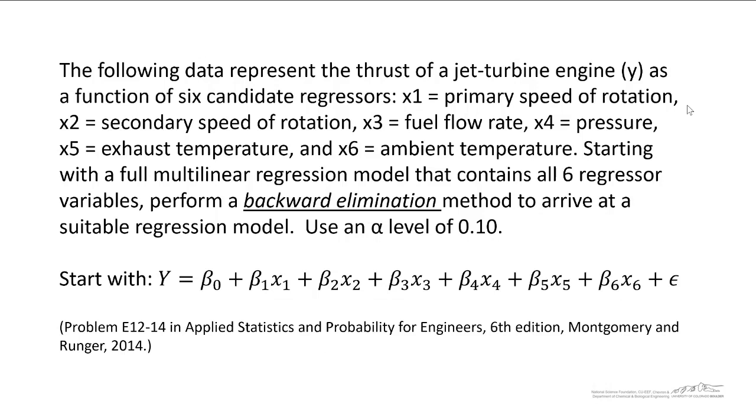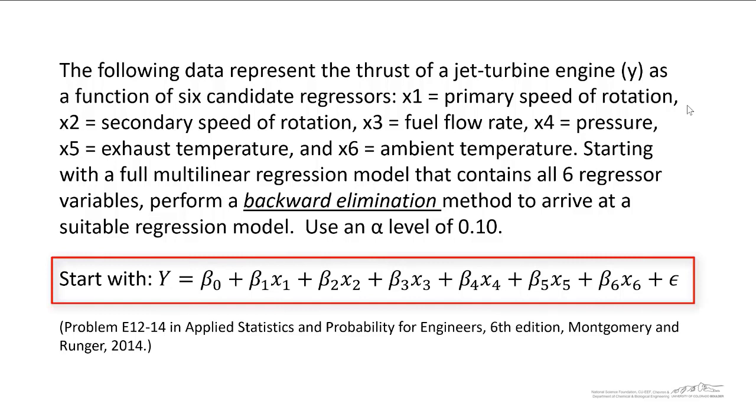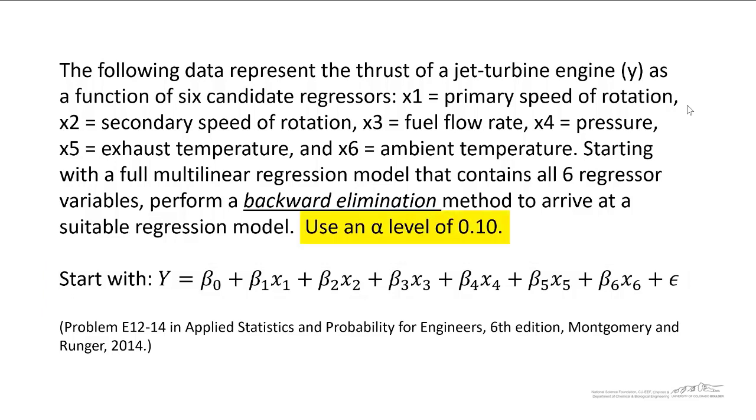So I've got an example here. This is an example from your textbook. The following data represent the thrust of a jet turbine engine. That's our response as a function of six candidate regressors. So the scientists hypothesized that perhaps six different things play a role in the thrust. We have primary speed of rotation, secondary speed of rotation, the fuel flow rate, the pressure, the exhaust temperature, and the ambient temperature. So we're going to start with a full multilinear regression model, this model shown down here. And we're going to perform a backward elimination method to arrive at a suitable regression model. We're going to use an alpha of 0.10.